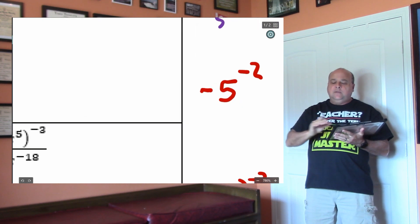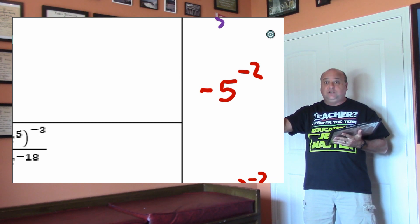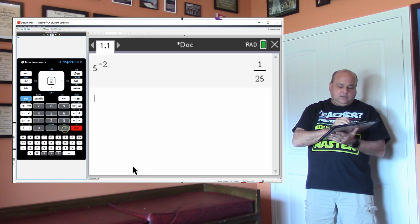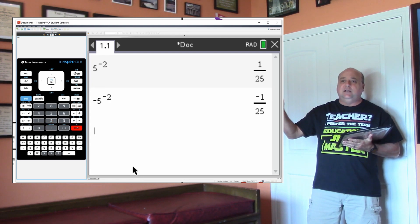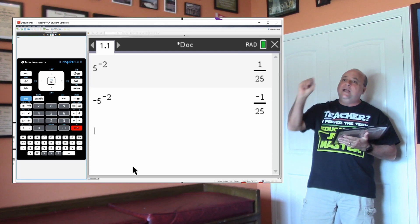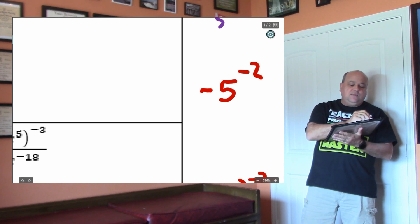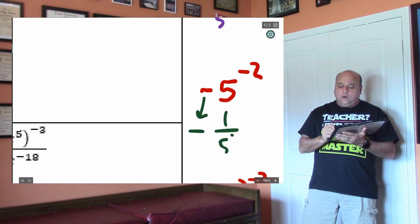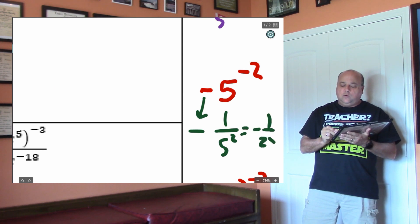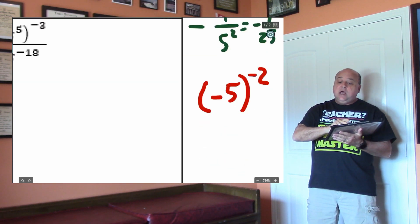This is going to drive y'all nuts: negative 5 to the negative 2. Most of y'all are thinking this is negative 5 times negative 5, which is positive 25. Let's do this on the calculator — I'm going to hit negative 5, caret, negative 2. Notice it's not positive, it's negative. The negative does not get the exponent because it's not in parentheses. So this negative is dropping, and then you're putting 1 over 5 squared, which is going to be negative 1 over 25. The negative does not get the exponent unless it's in parentheses.